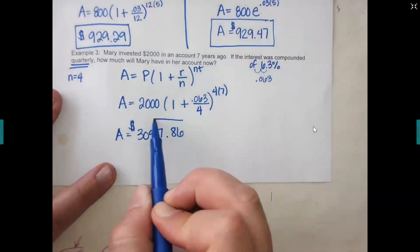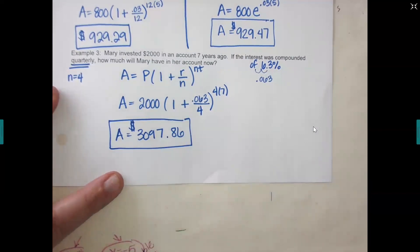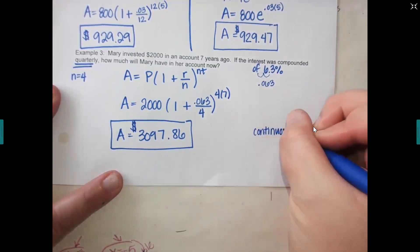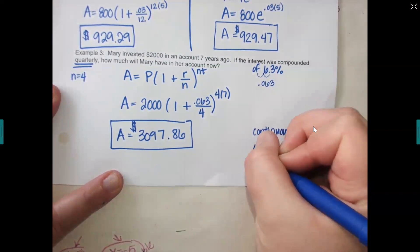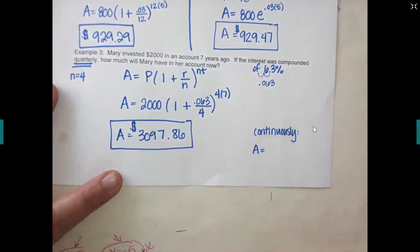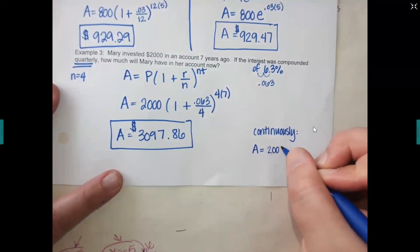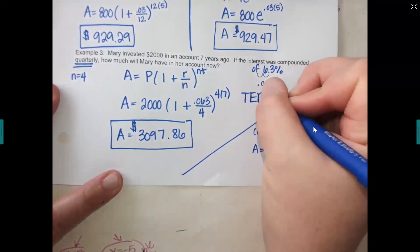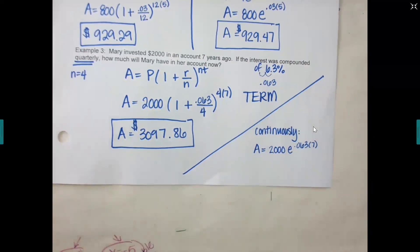So 2,000 times 1 plus 0.063 over 4 up to the 4 times 7. So it should look like that once you type today. So the $2,000 would grow to $3,097 and 80 cents. If it said continuously, which I'm not going to work out, but I'm going to at least write down the formula, so put over here to the side for continuously, what would I change? Would the 2,000 still go in the front? Yes. But the E would be up to the rate times time. So what was my rate? 0.063 times 7. So this is term up here. And then this is continuously at the bottom. Questions on that?